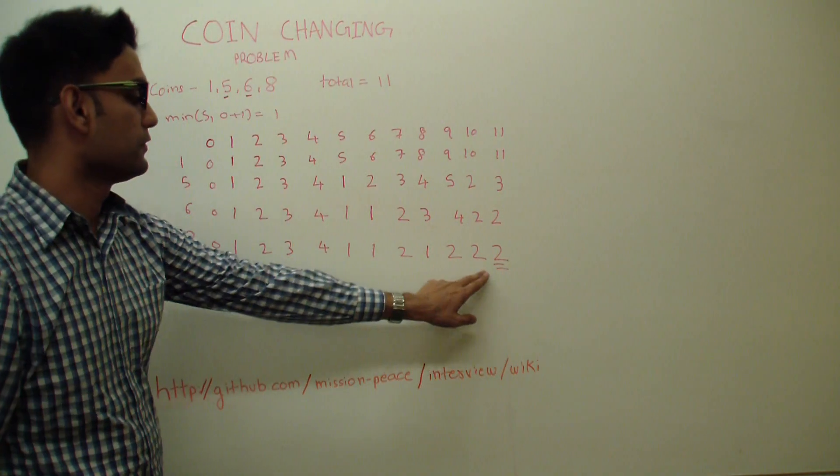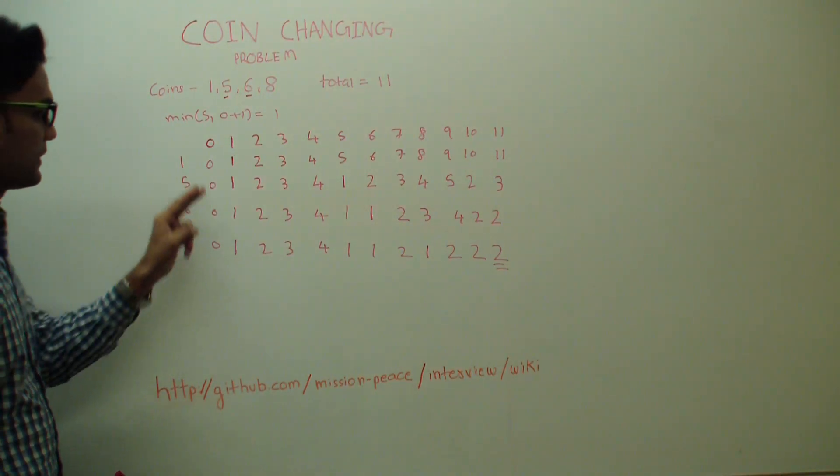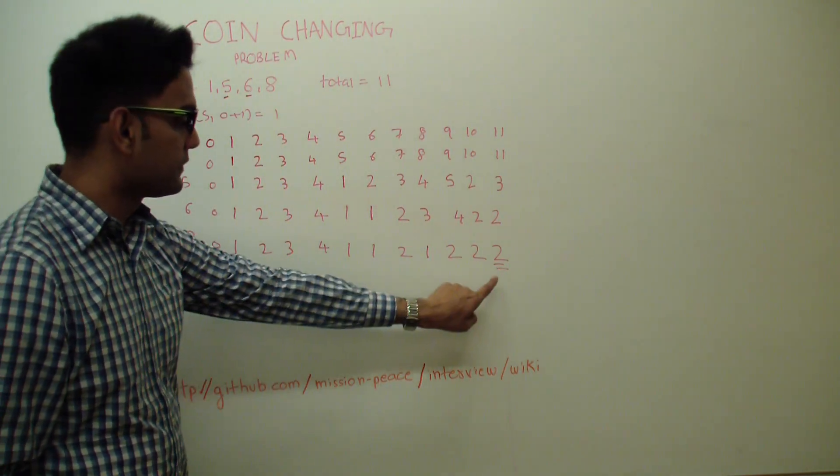So the final answer is 2. So given coins of denomination 1, 5, 6 and 8 and given a total 11, the minimum number of coins we'll need is 2.